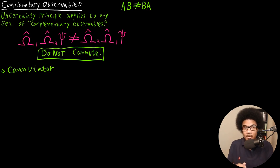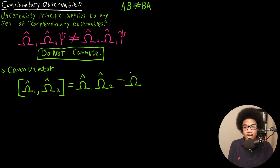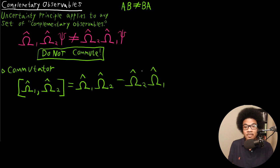The way that we quantify how these operators complement each other is known as the commutator. The notation for a commutator is square brackets containing the two operators being compared — in this case omega-1 and omega-2 — with a comma between them. Basically, the commutator quantifies the difference between the two outcomes: operating with omega-2 first versus operating with omega-1 first. You apply one product of operators and subtract it from the other product, giving you the difference between those two outcomes.